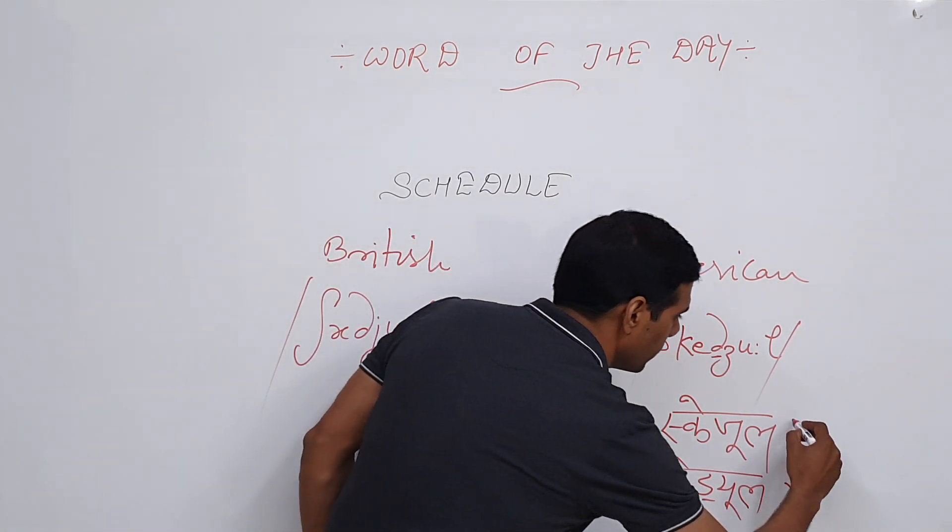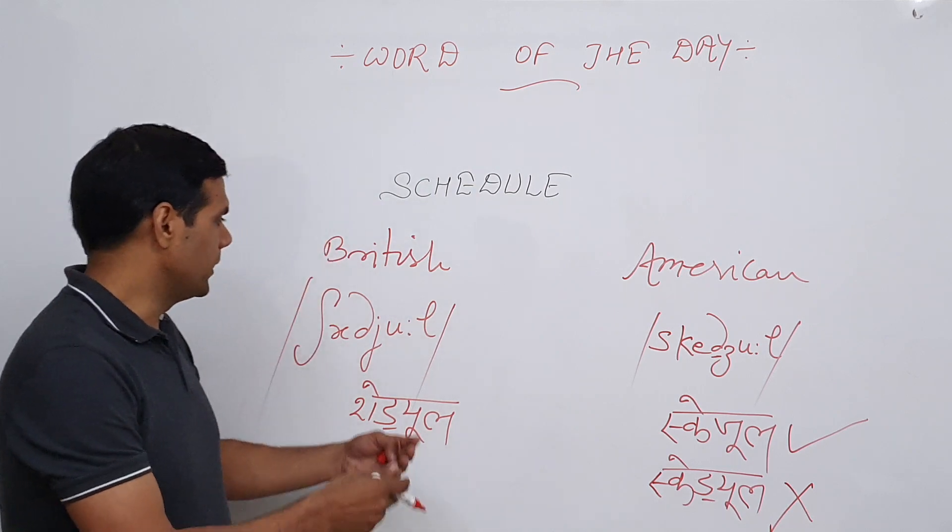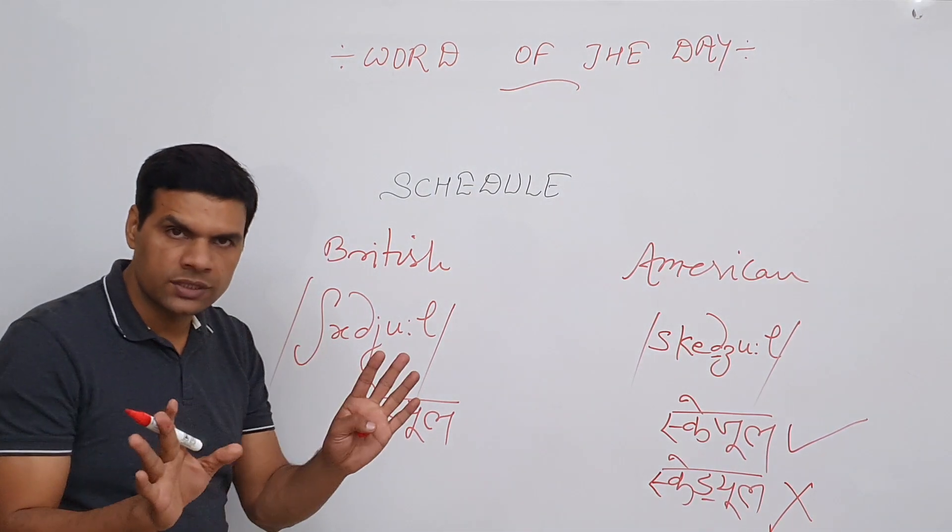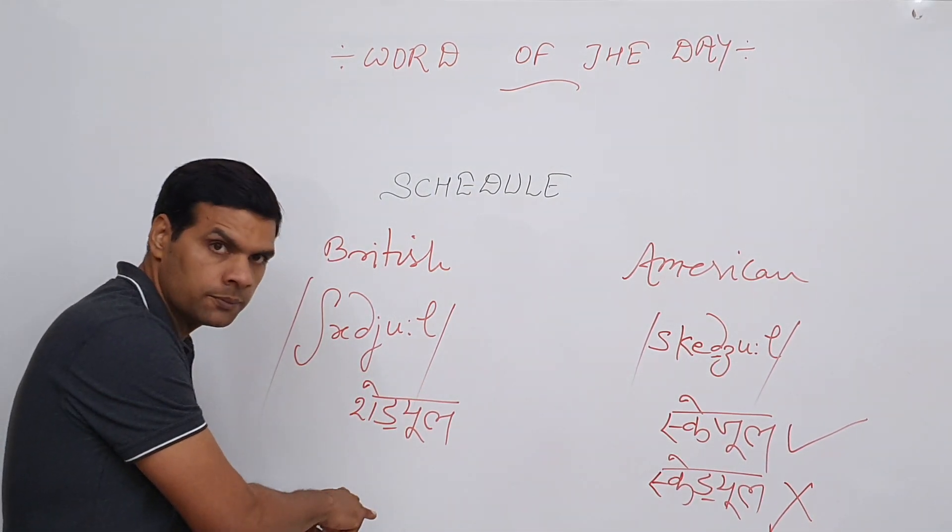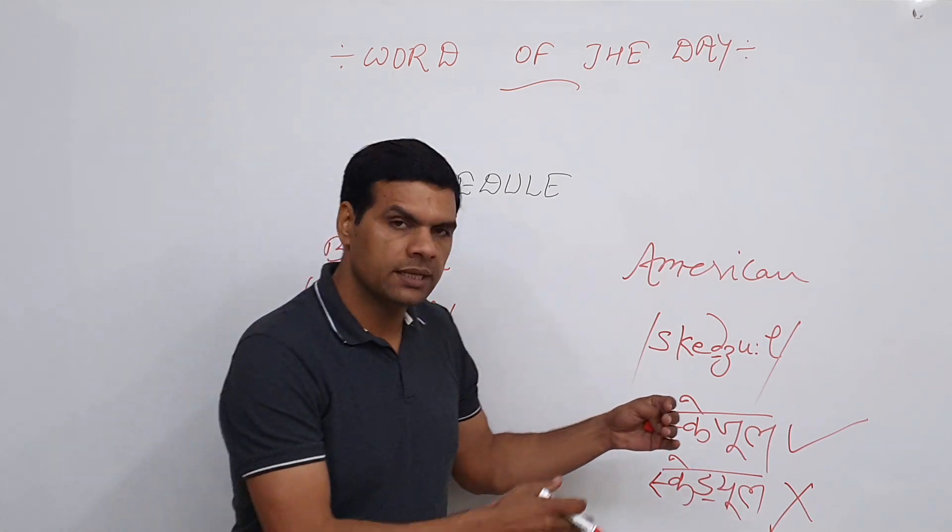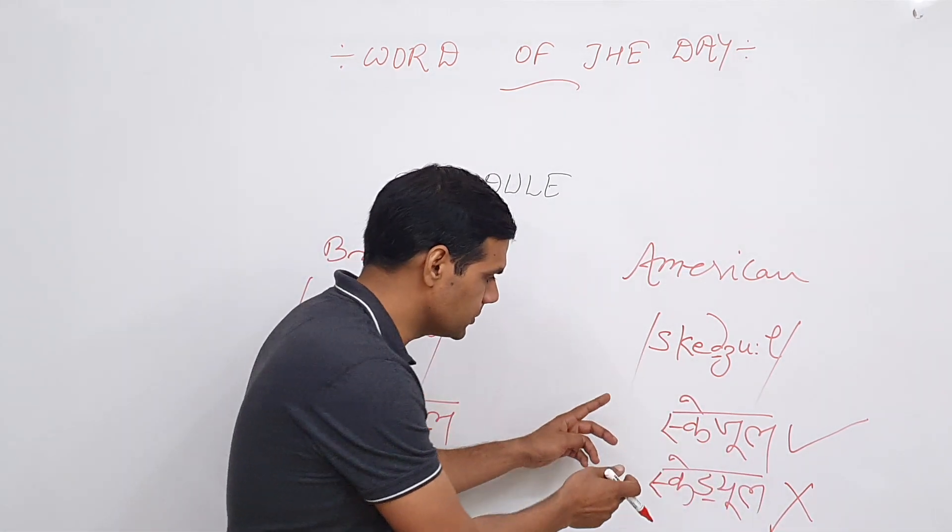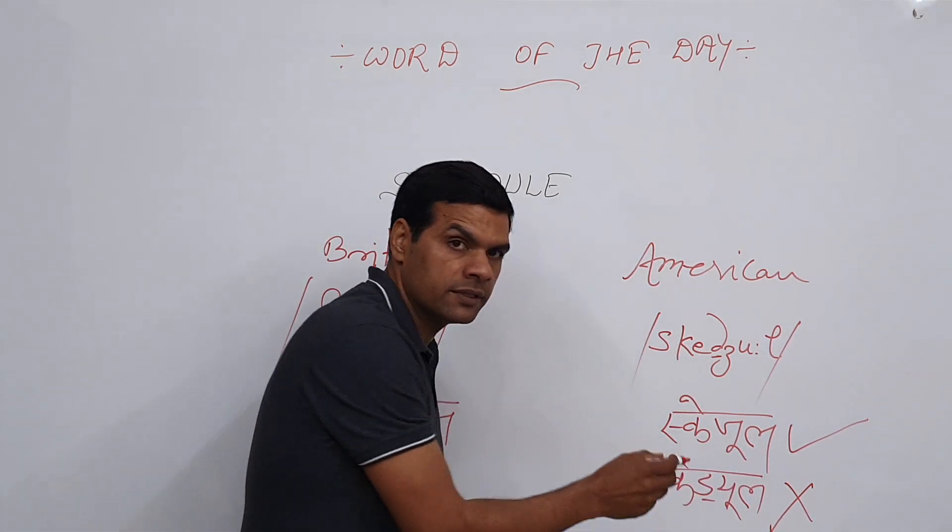So this one is wrong and this one is right. When you speak it the British way, there is no confusion at all—it is always 'schedule.' But when people try to speak it the American way, there is confusion between these two words. But 'schedule' is always wrong.